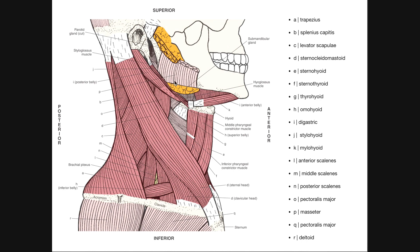Muscle P, up here, is the masseter muscle. The masseter is involved in closing the jaw, but it is not part of this anterior neck musculature — it's just here for reference. Down here, Q is our pectoralis major muscle, and R is the deltoid muscle.